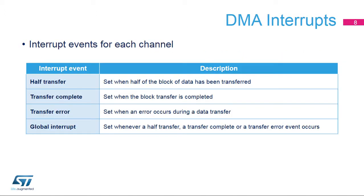Each DMA channel can notify software with an interrupt triggered by any of four possible events: half-block transfer completion, block transfer completion, transfer error, or any of the three above events — in other words, global.